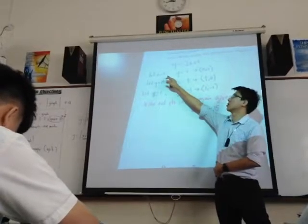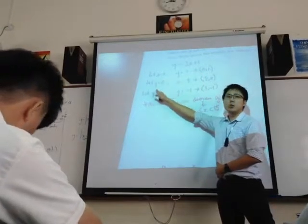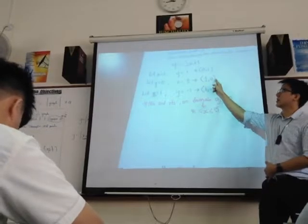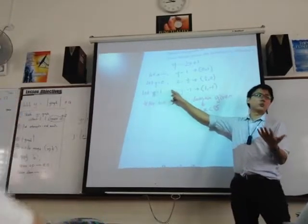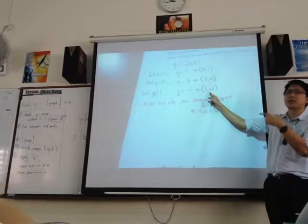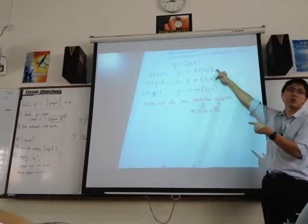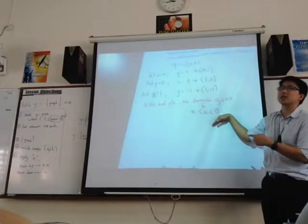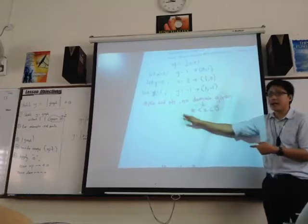Earlier on, I used the table method. Sometimes it's confusing. So there's another way you can just sub in x equals to 0, find the first point. Y equals to 0, find the second point. X equals to any value, this is a checking point. Check whether the first two is correct or not.